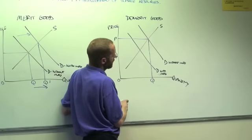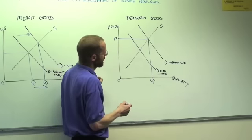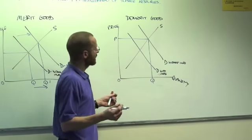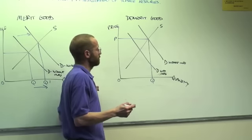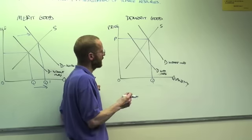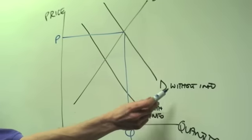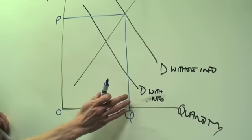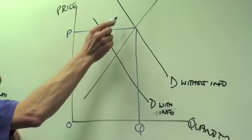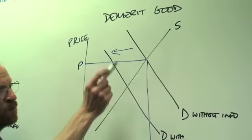If there is a campaign where people get information, for example, on the dangers of drink driving or binge drinking or smoking, then with this information, some people will decide not to buy the product anymore. The demand curve will shift inwards.